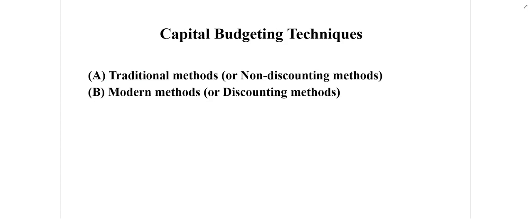All of this can be done through capital budgeting techniques, which we will discuss in the next videos. Overall, these techniques are divided into two parts: Part A is called the traditional method, also known as non-discounting methods, and Part B is called the modern method or discounting method. The non-discounting methods do not consider the time value of money.